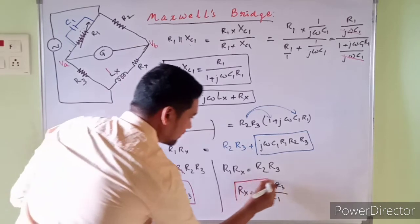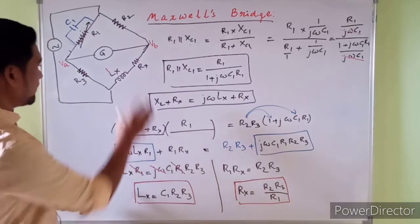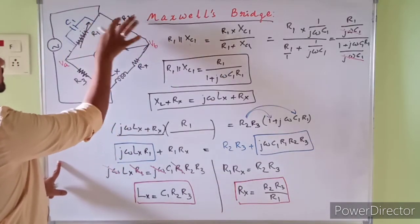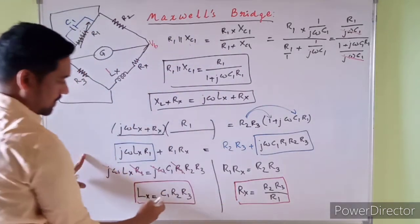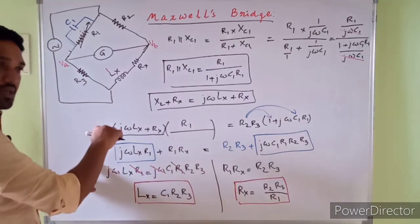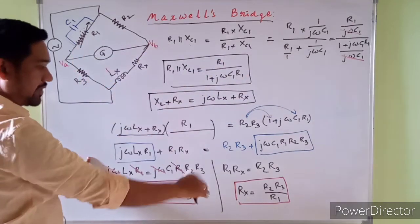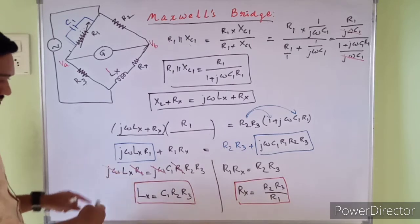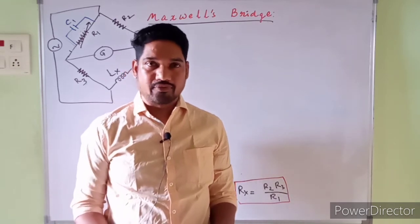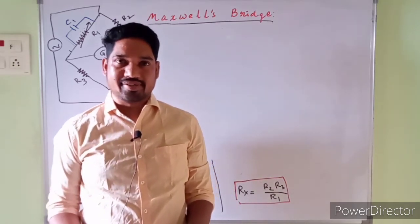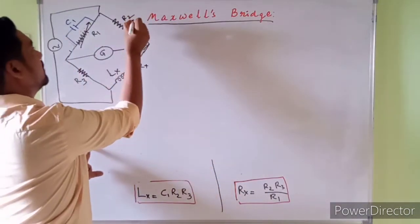In this bridge all the values of resistance and capacitance are known — only LX and RX are unknown, and they can be evaluated using these expressions. The derivation started by assuming balance is obtained, at which the product of opposite impedances are equal. Now a small numerical example for a better understanding from an exam point of view.